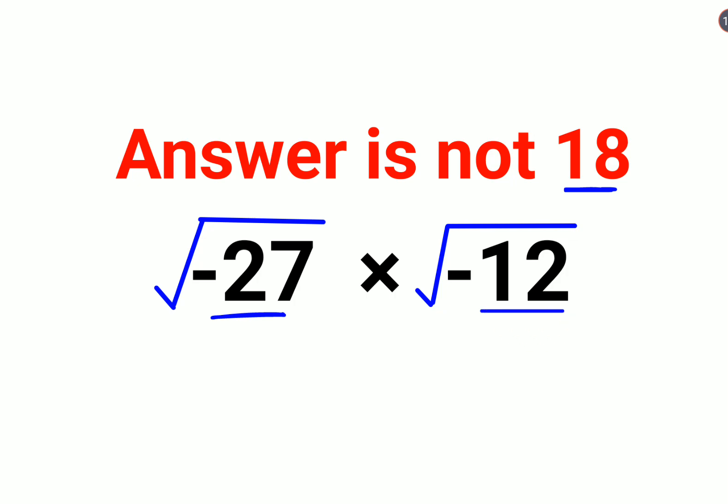A lot of people end up doing it this way: minus 27 into minus 12. Negative into negative, we know it becomes positive.